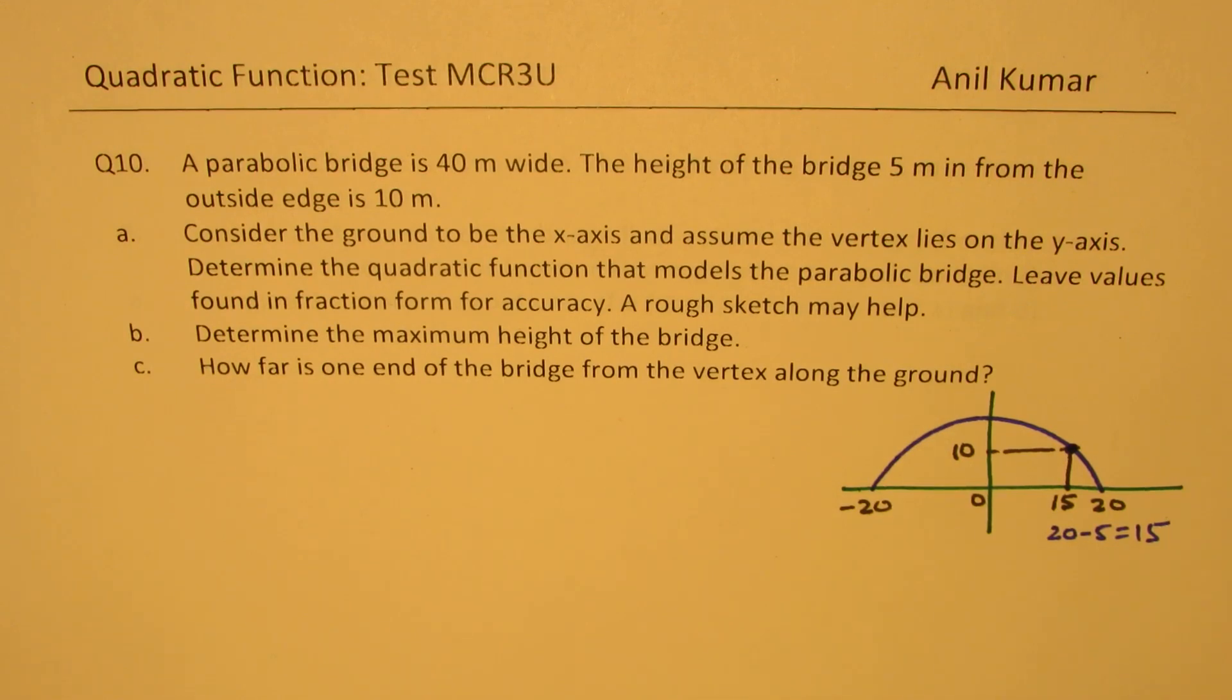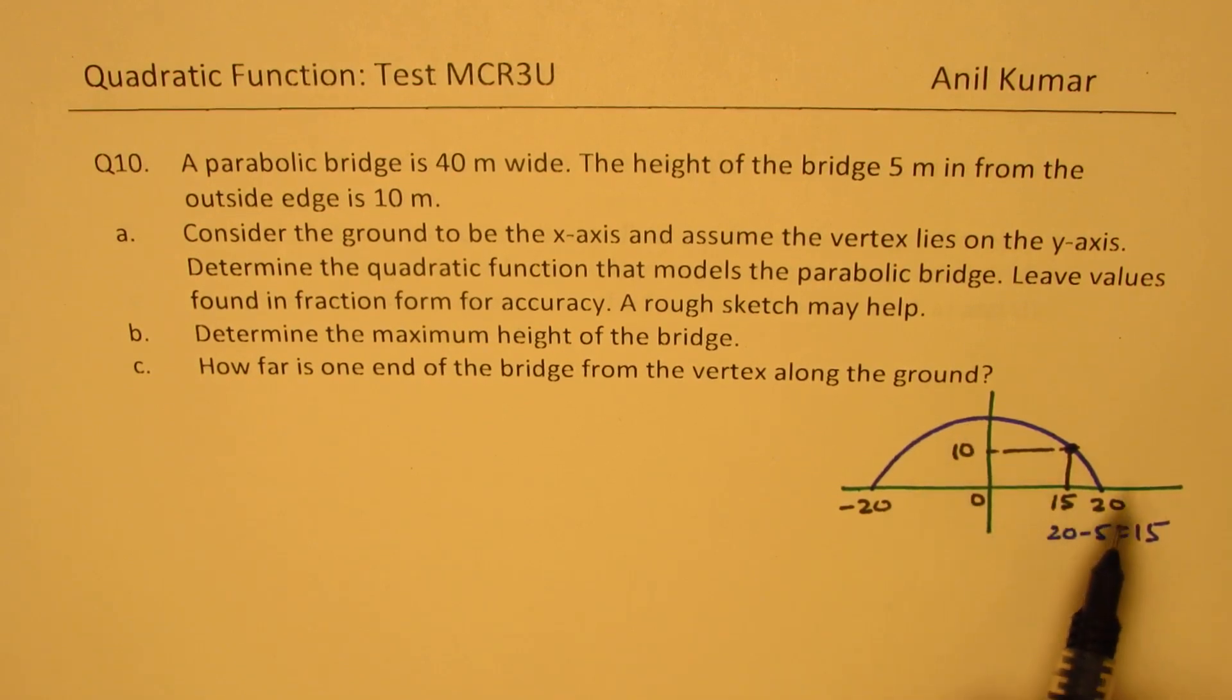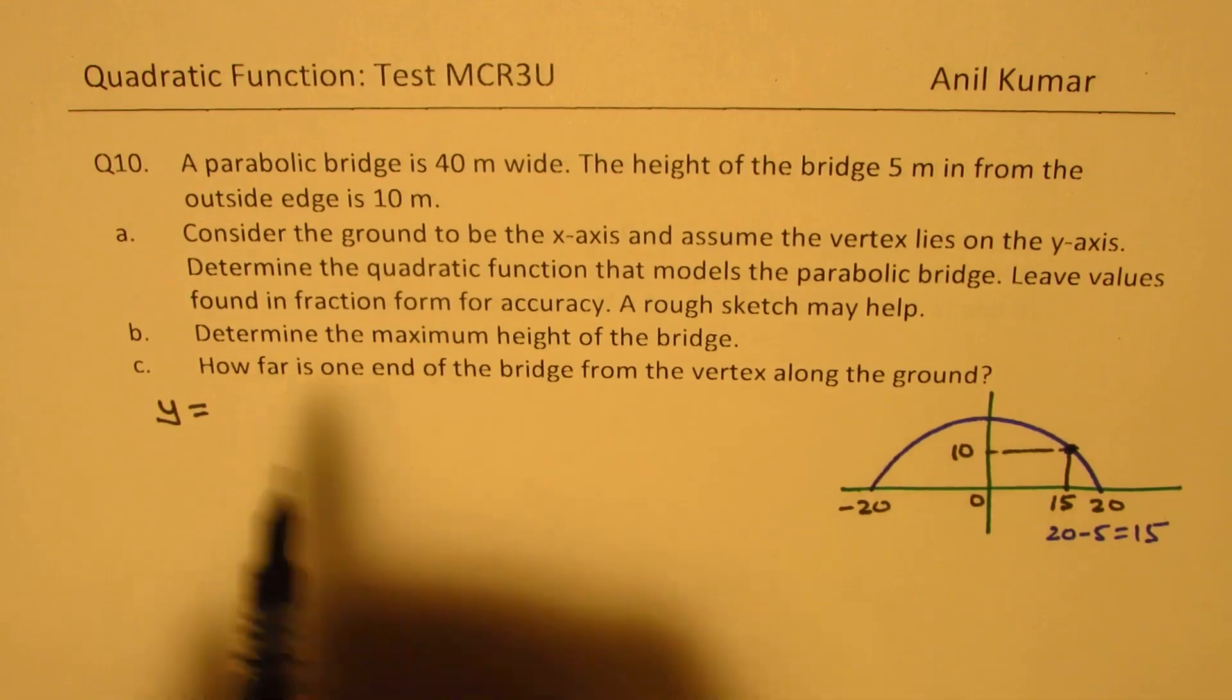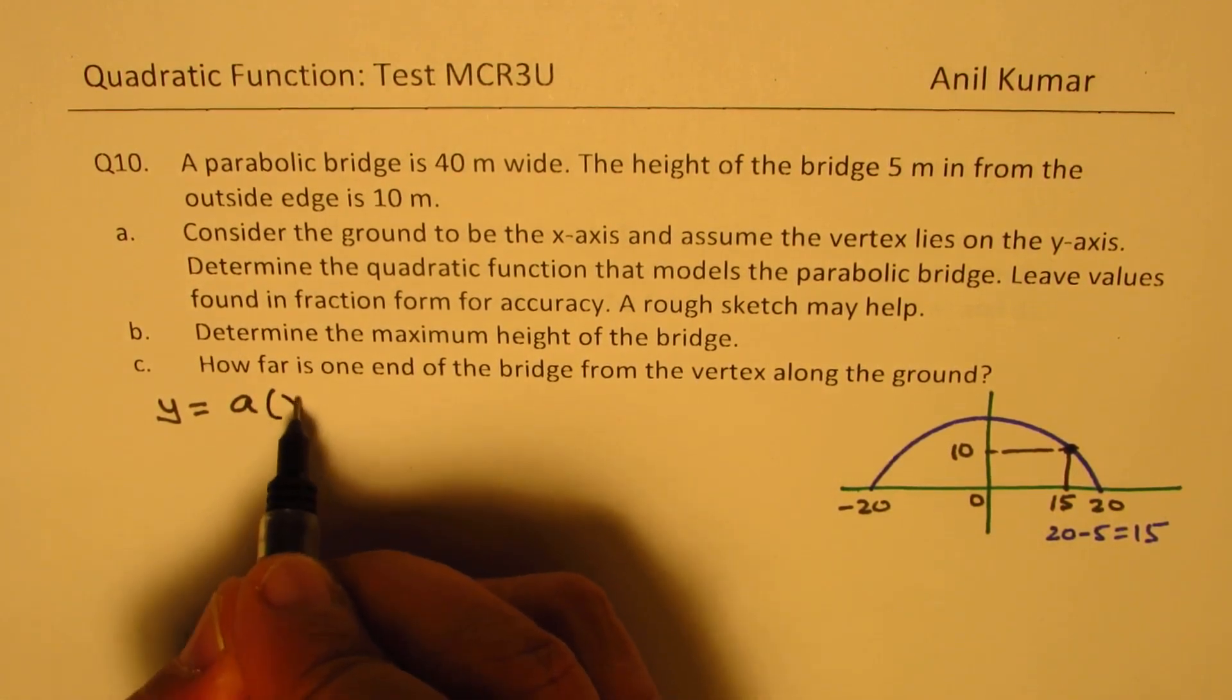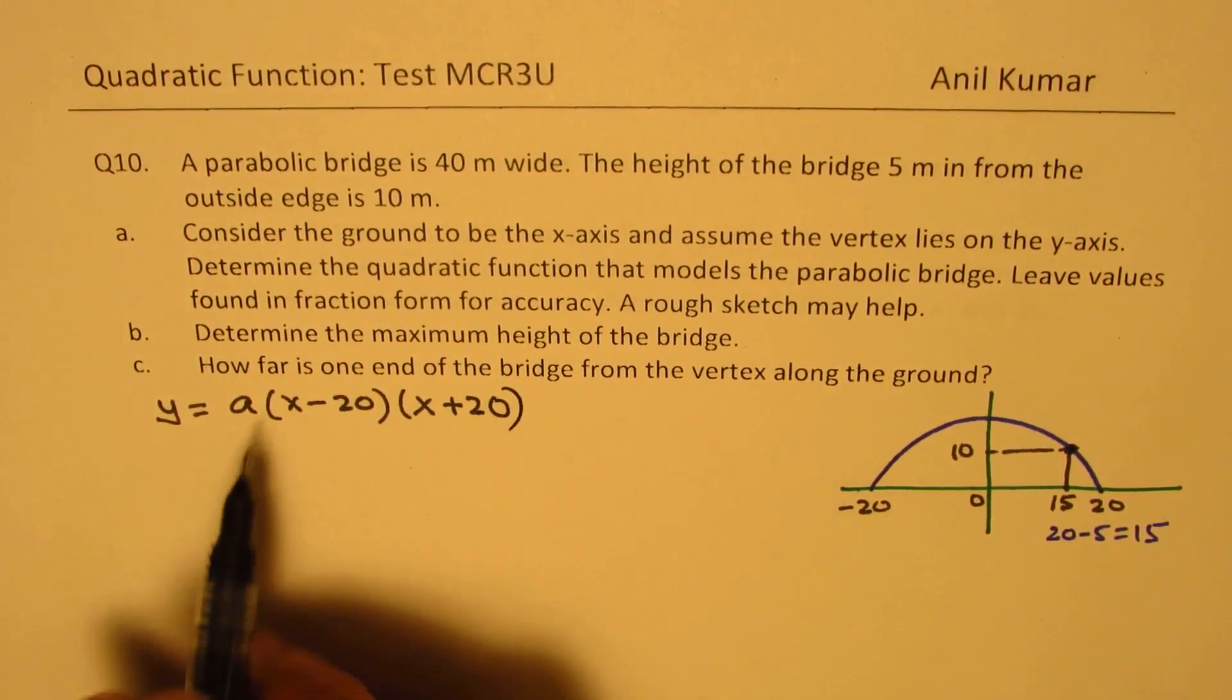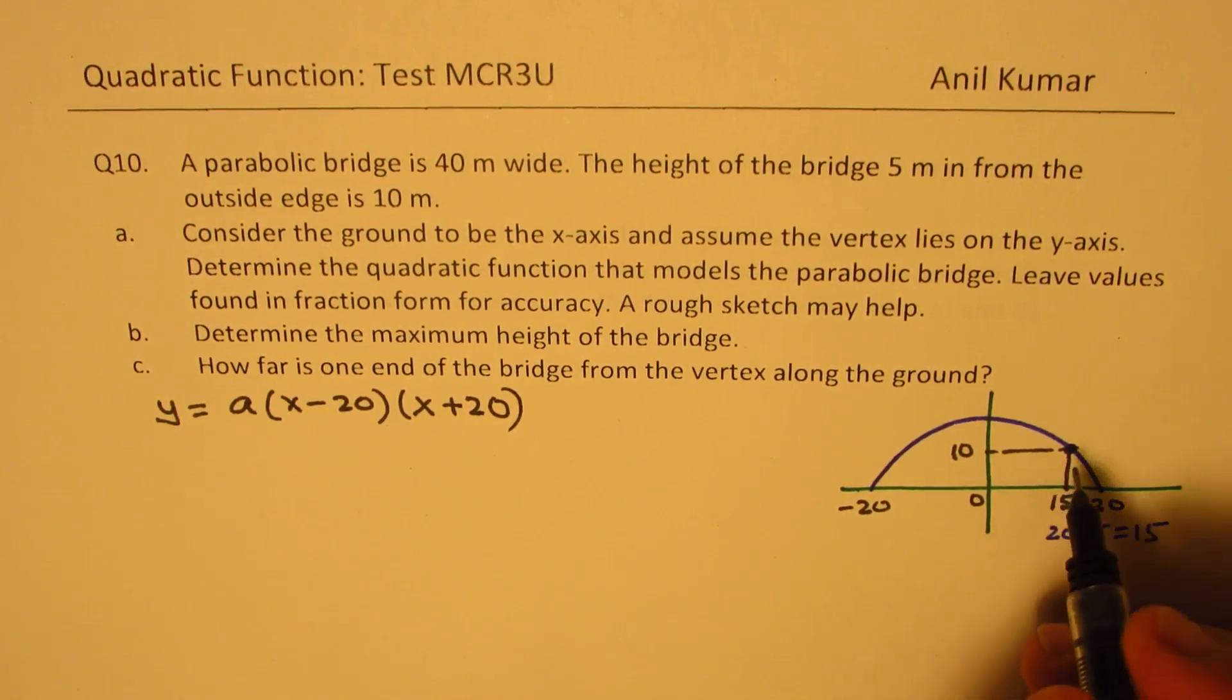And now we need to find the equation. So we can easily find using the vertex form. So y equals to the vertex, we don't know the height. So we will use these two points. So we have to write a. One intercept is x minus 20. The other one at x plus 20. Correct.